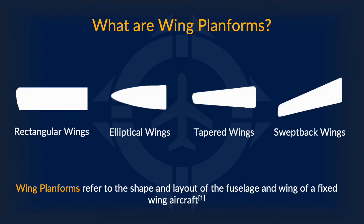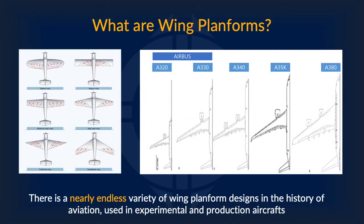So what exactly are wing planforms? Wing planforms are simply the shape and layout of the fuselage and wing of a fixed wing aircraft — basically it's the top-down view of an airplane wing. There is a nearly endless variety of wing planform designs that were developed and improved upon in the history of aviation for both experimental and production aircrafts, each with their own purpose for use with different aircrafts.